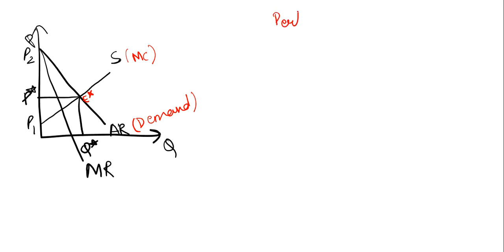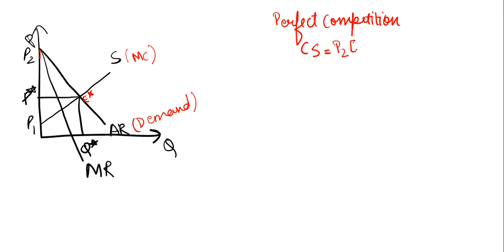Now let us see what is our consumer surplus, producer surplus, and total surplus. Our consumer surplus is the region above our price line P star E star and below our demand curve, that is our AR curve. This triangle P2 P star E star is our consumer surplus. The producer surplus is the area above our supply curve and below our price line P star E star — this triangle P star P1 E star is our producer surplus.